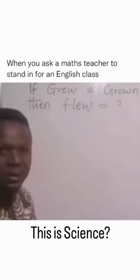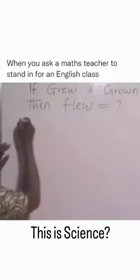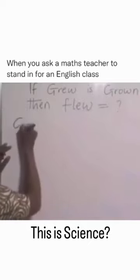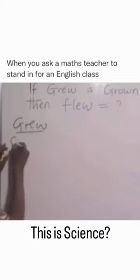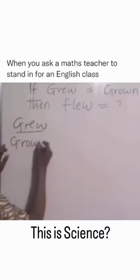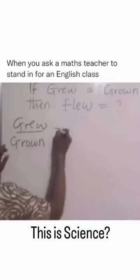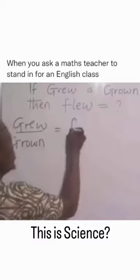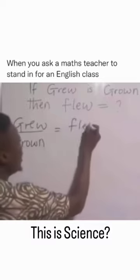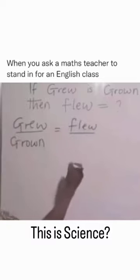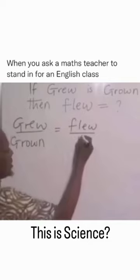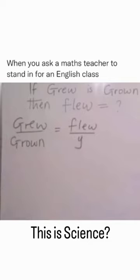If we want to get the past participle, look at what a mathematician will do. So: grew over grown is equal to flew over... the past participle we don't know, so we can represent it with Y.